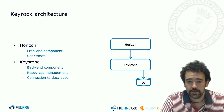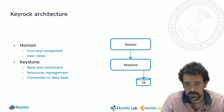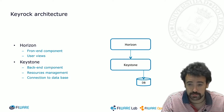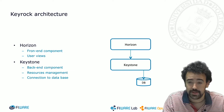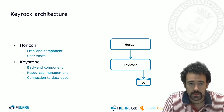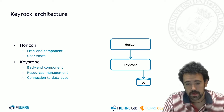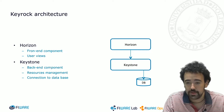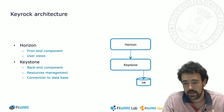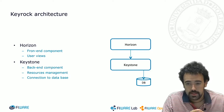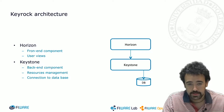Horizon is the frontend component of Keyrock, basically used to manage the user interface. It also exposes several APIs to manage OAuth2 tokens. Keystone is the backend component in charge of managing the API but also all the resources that take part in this component — for instance users, projects, applications, and so on. Moreover, this component is connected to a database in order to add persistence to this environment.